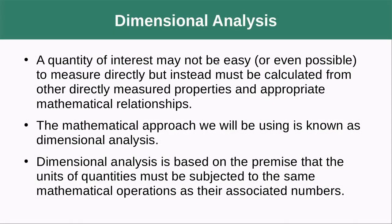A quantity of interest may not be easy or even possible to measure directly, but instead must be calculated from other indirectly measured properties and appropriate mathematical relationships. For instance, we can't necessarily measure density directly. We can measure mass and volume and then calculate what the density is.